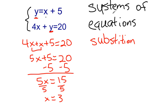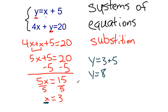We get X equals 3, so we're halfway there. Now we need Y. Since X is 3, we substitute back into Y equals X plus 5, giving Y equals 3 plus 5, which is 8. Our ordered pair is (3, 8). We verify: 3 plus 5 equals 8 — good. And in the second equation: 4 times 3 is 12, plus 8 is 20. Correct!